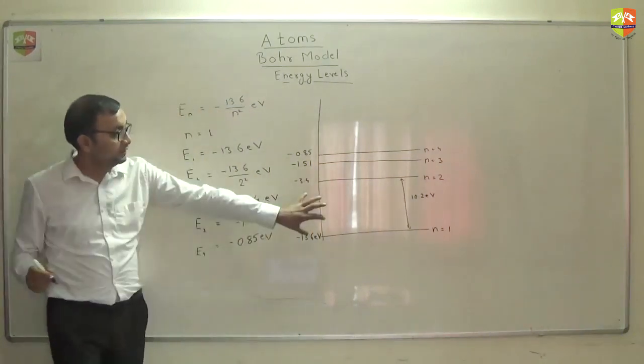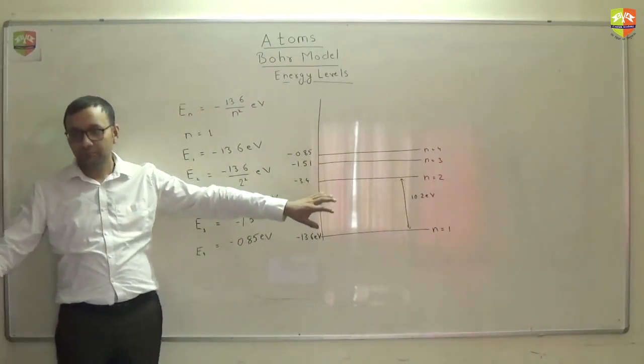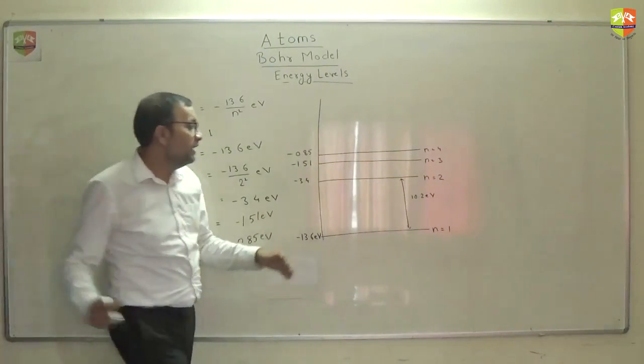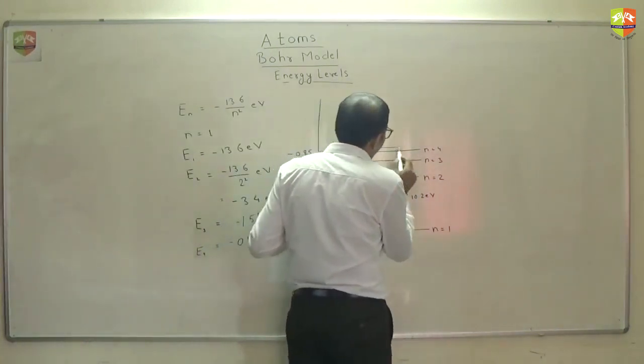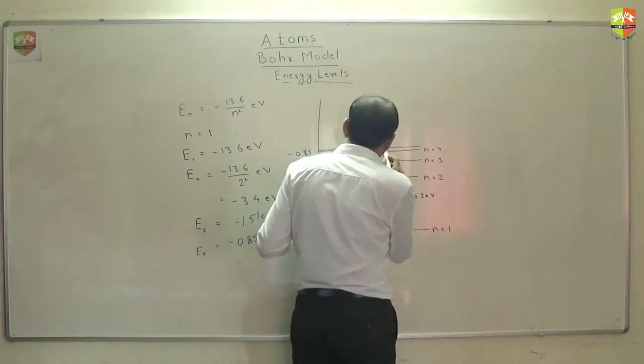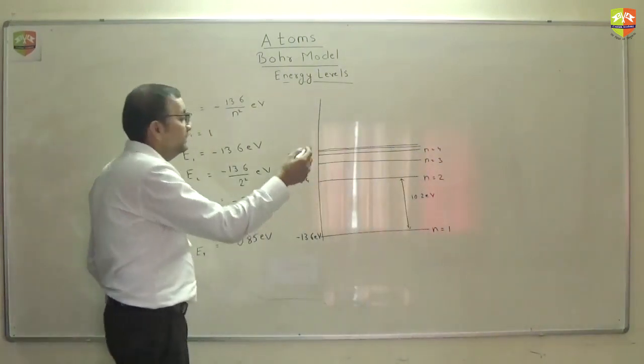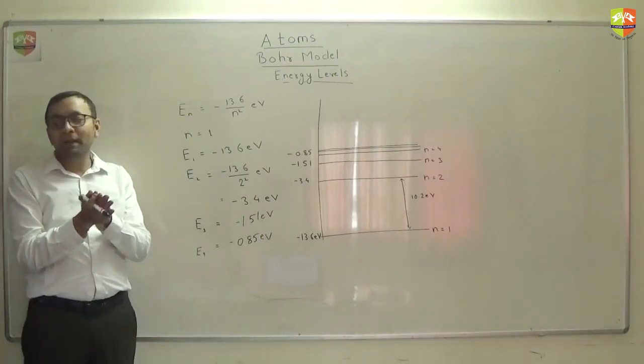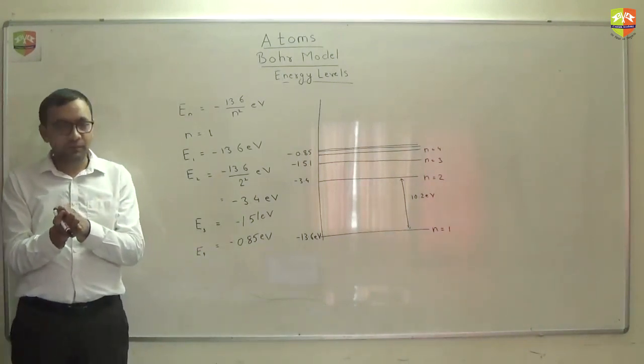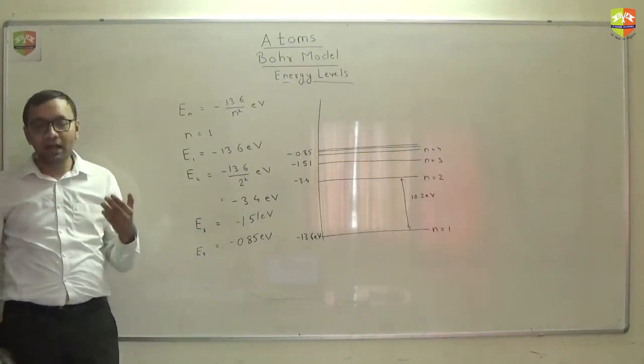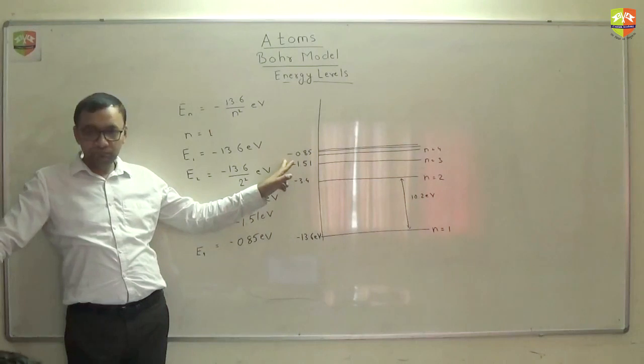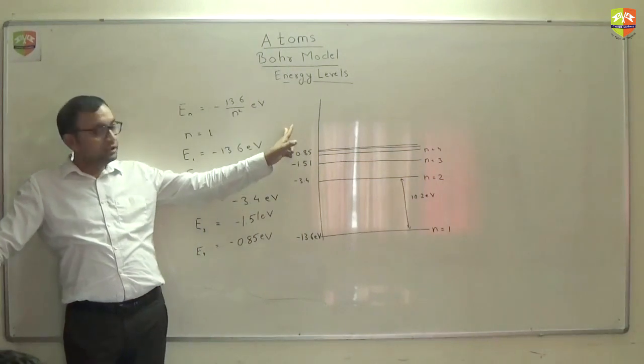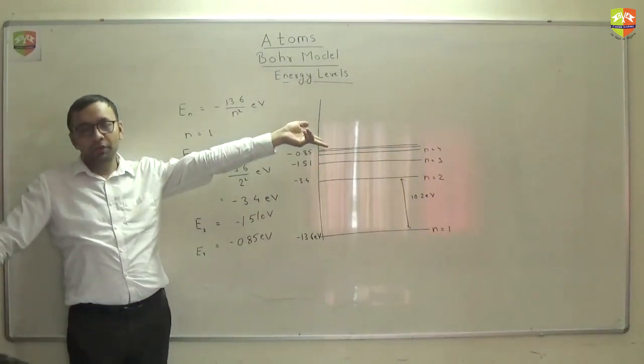One thing you will notice that the differential energy is reducing. Slowly and slowly the next level is coming closer and closer. So n equal to 5 will be further closer. N equal to 6 will be more close. So like this there will be till n equal to infinity. I mean slowly and slowly they coincide. So after a point it doesn't matter what is the quantum number. And anyways, if you give it large enough energy, energy tends to 0. From this energy is going towards 0 and as soon as energy goes to 0, the electron is free. It is not bounded.